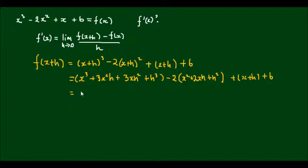And if I continue expanding, I'll get x cubed plus 3x squared h plus 3xh squared plus h cubed. So the first term does not change, and I'll expand the negative 2 in, so I'll get negative 2x squared minus 4xh minus 2h squared plus x plus h plus 6.